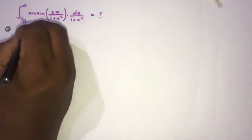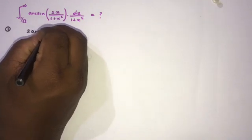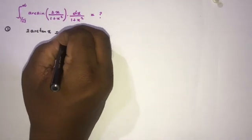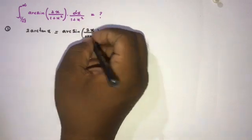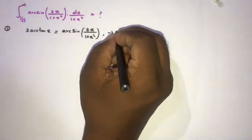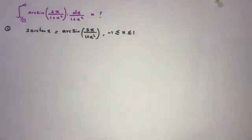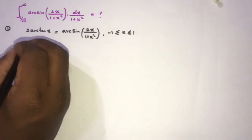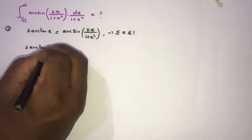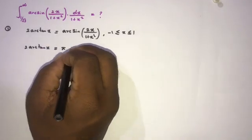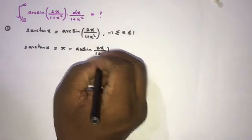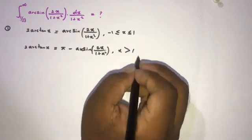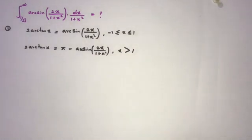For the first method, we know that 2·arctan(x) equals arcsin(2x / (1 + x²)) for x in between −1 and 1. Also, we know that 2·arctan(x) equals π minus arcsin(2x / (1 + x²)) for x greater than 1.